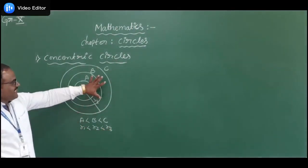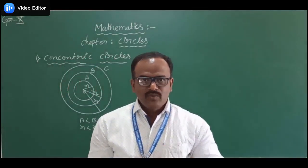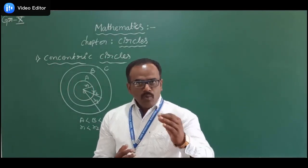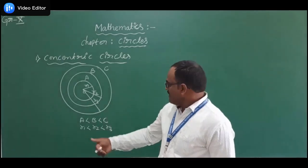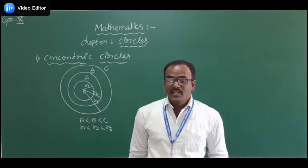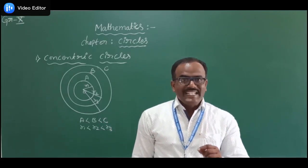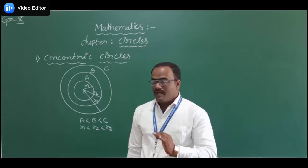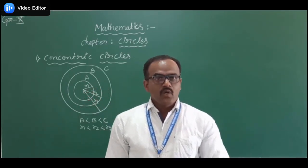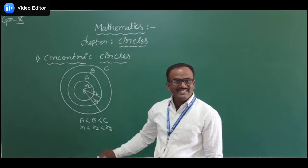Therefore these three circles are called concentric circles. Two or more circles which are having the same center but different radii are called concentric circles. In the English dictionary, the meaning of concentric also means same center — circles having the same center but different radii are called concentric circles.